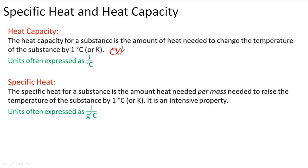It is an extensive property as opposed to specific heat which is an intensive property. Specific heat for a substance is the amount of heat needed per mass, so 1 gram usually, to raise 1 gram of the temperature of a substance by degree Celsius or Kelvin. This is usually expressed in units of joules per gram times degree Celsius.